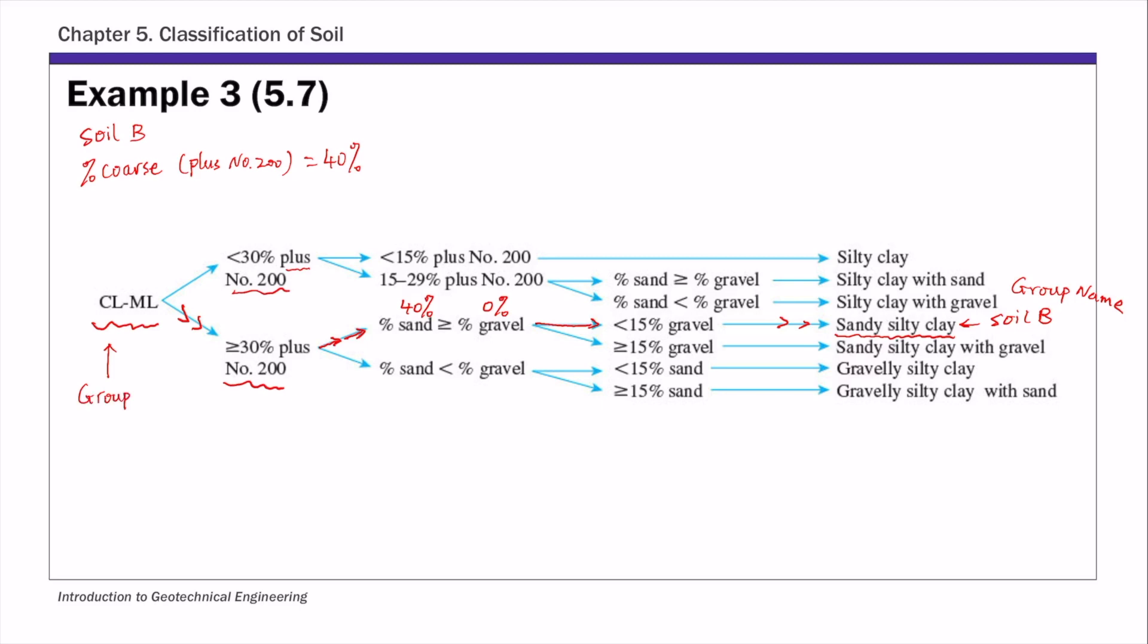So that's a complete classification of soil B with group symbol, which is the dual symbol case, CL-ML. And group name, sandy silty clay. So that's a complete classification. And this example three here, so in the previous video, we covered soil A, which is a coarse-grained soil that has a dual symbol group symbol. And then this is soil B, another case of dual symbol, but it's for fine-grained soil.